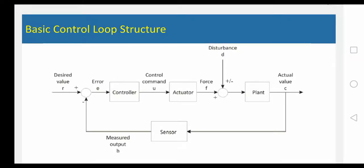Here a basic control loop structure we are having. Here that is a plant — we are not going to change the plant. Whenever, at this particular point, we are having some disturbances. Here I am going to use a controller. Here actuator — what is the actuator? Whatever command the controller will give, that command will be used by the actuator to the plant. Here we are having a very simple basic control loop structure.